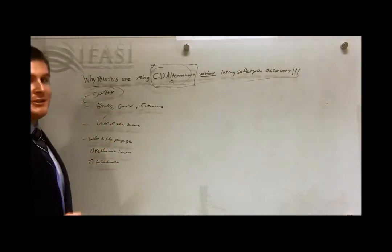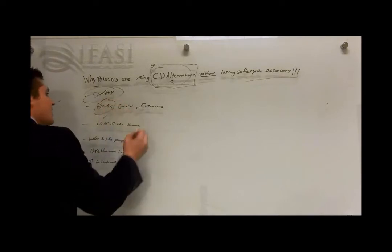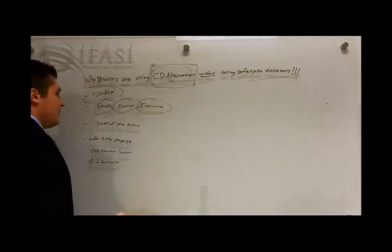You have three different entities that live in this world. You have banks, you have the government, and you have insurance companies.